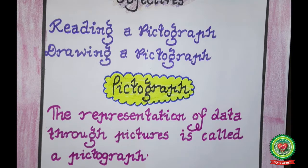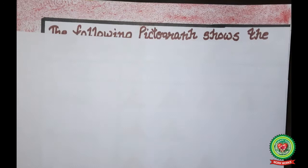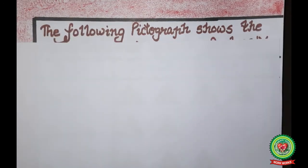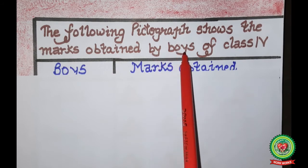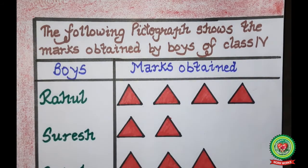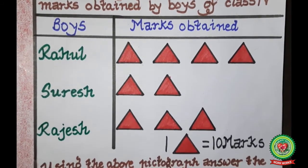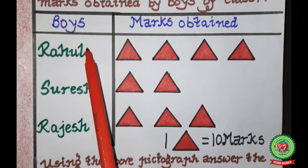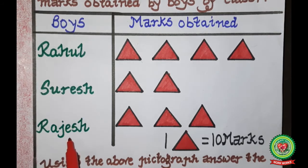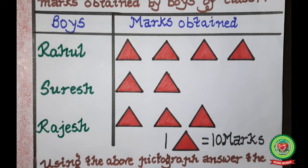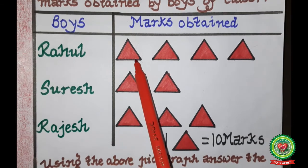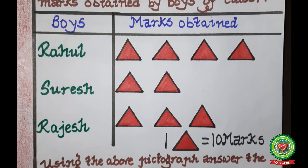Now let's understand with the help of examples. Example number one: the following pictograph shows the marks obtained by boys of class fourth. In this pictograph, the first column lists boys — Rahul, Suresh and Rajesh — and the second column shows their marks. A triangle is used as the picture, and one triangle represents ten marks.